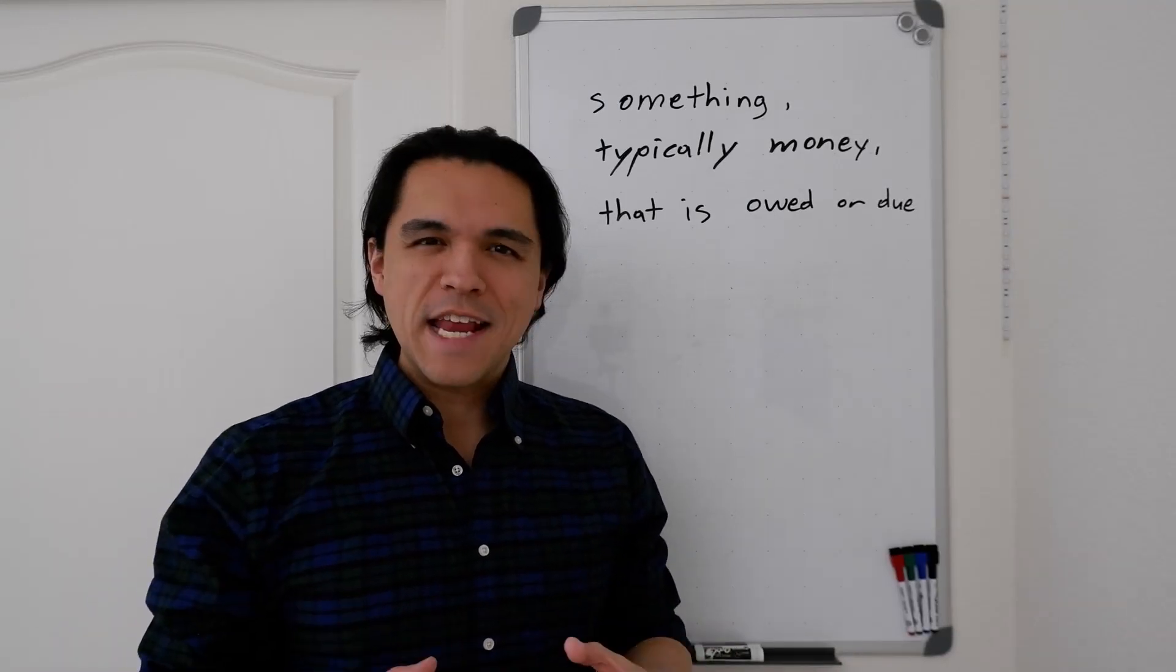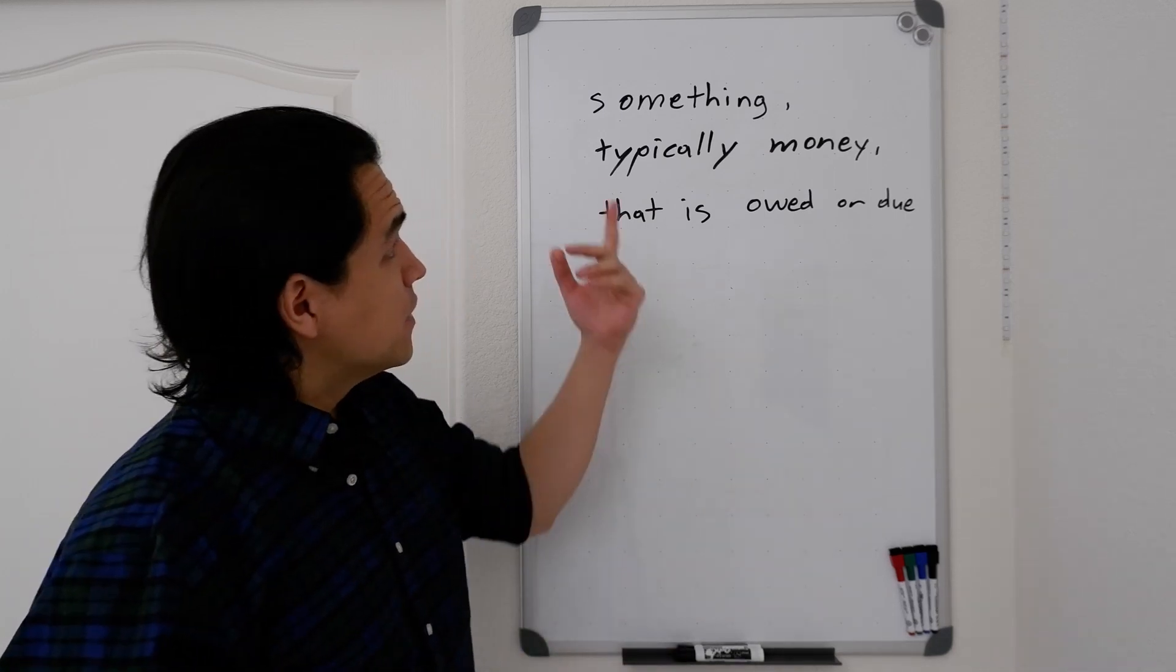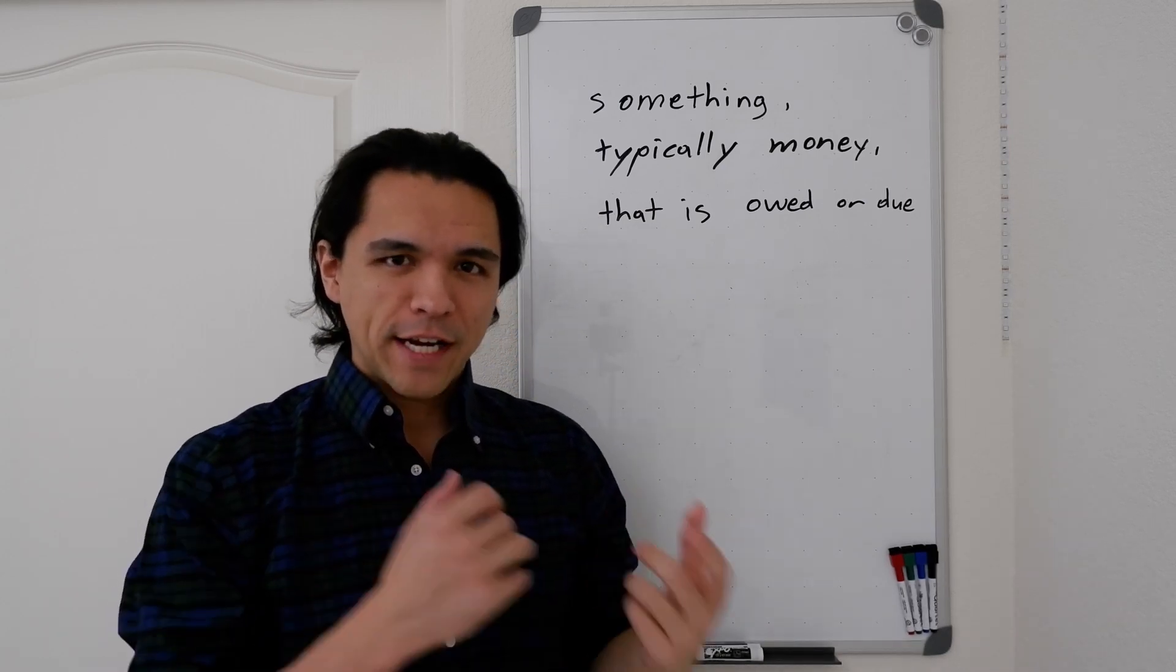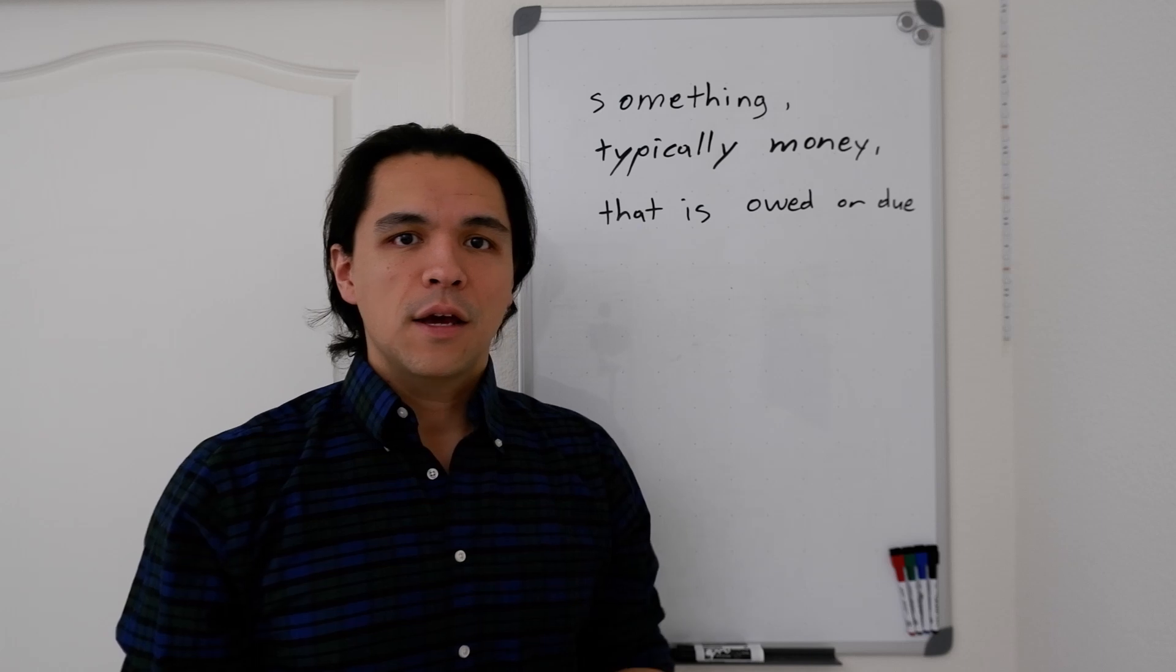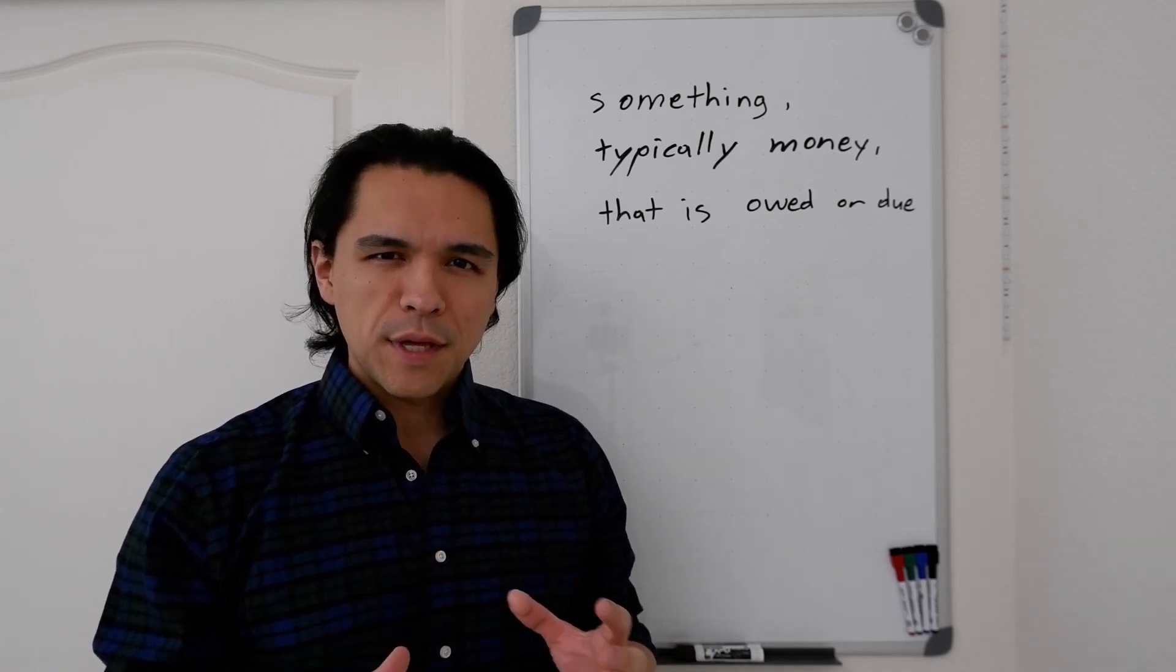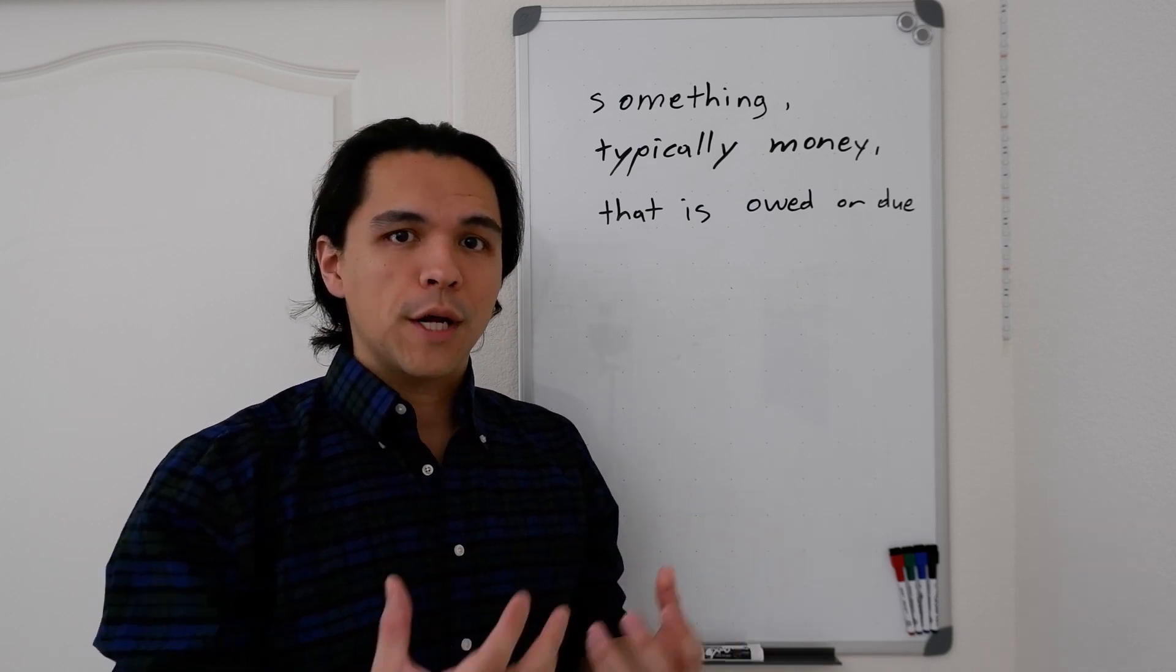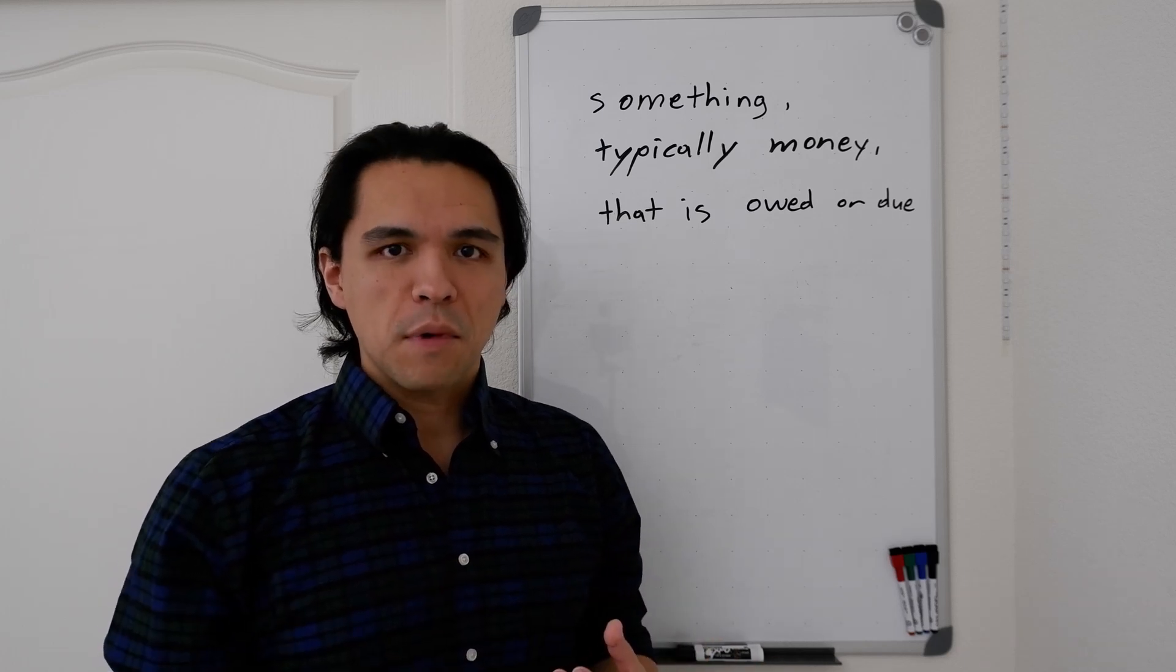So let's talk about what is debt. If you jump on Google, this is the definition you're going to find: something, typically money, that is owed or due. If we pause and think about this, a debt can be a financial obligation or a personal obligation where you owe someone something. But in the context of personal finance, we're always going to be thinking about this as some kind of monetary obligation wherein you have gotten some benefit by borrowing money from someone, some institution, and you owe them this money back.